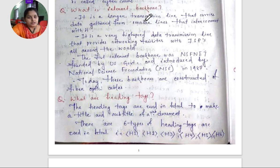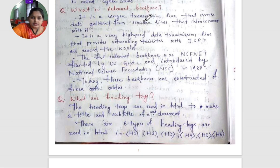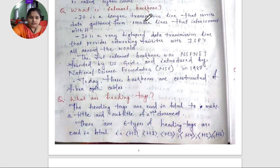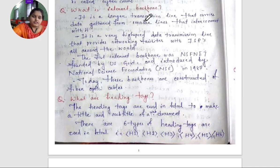The first internet backbone was NSFNet, founded by the US government and introduced by the National Science Foundation (NSF) in 1987. Today, these backbones are constructed of fiber optic cables.